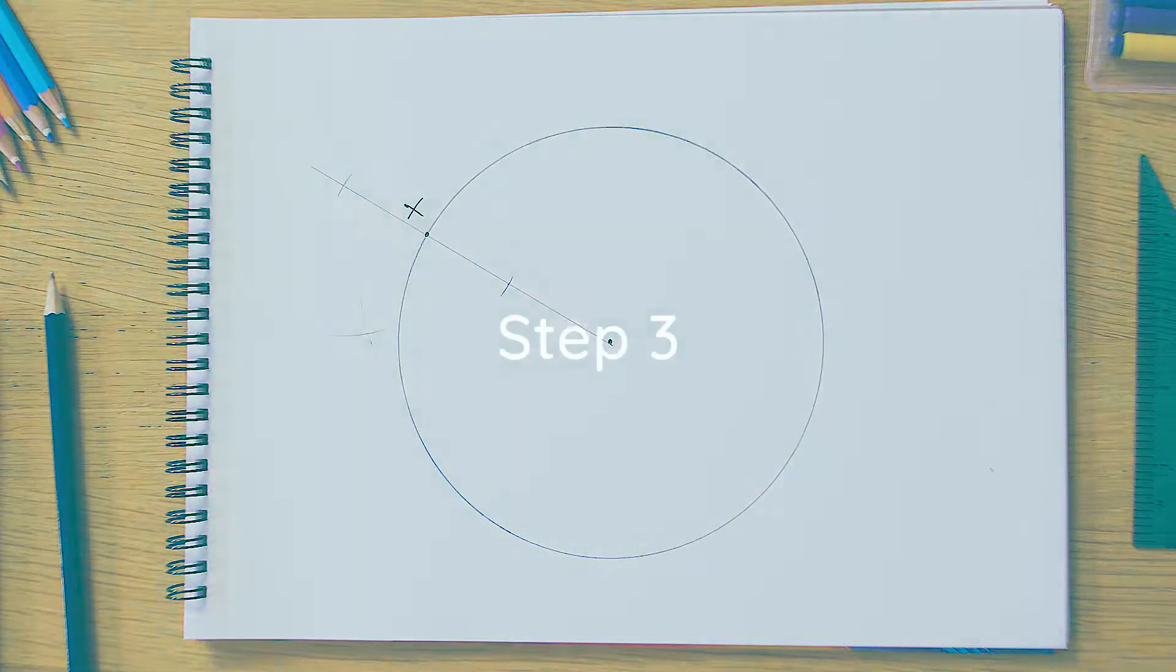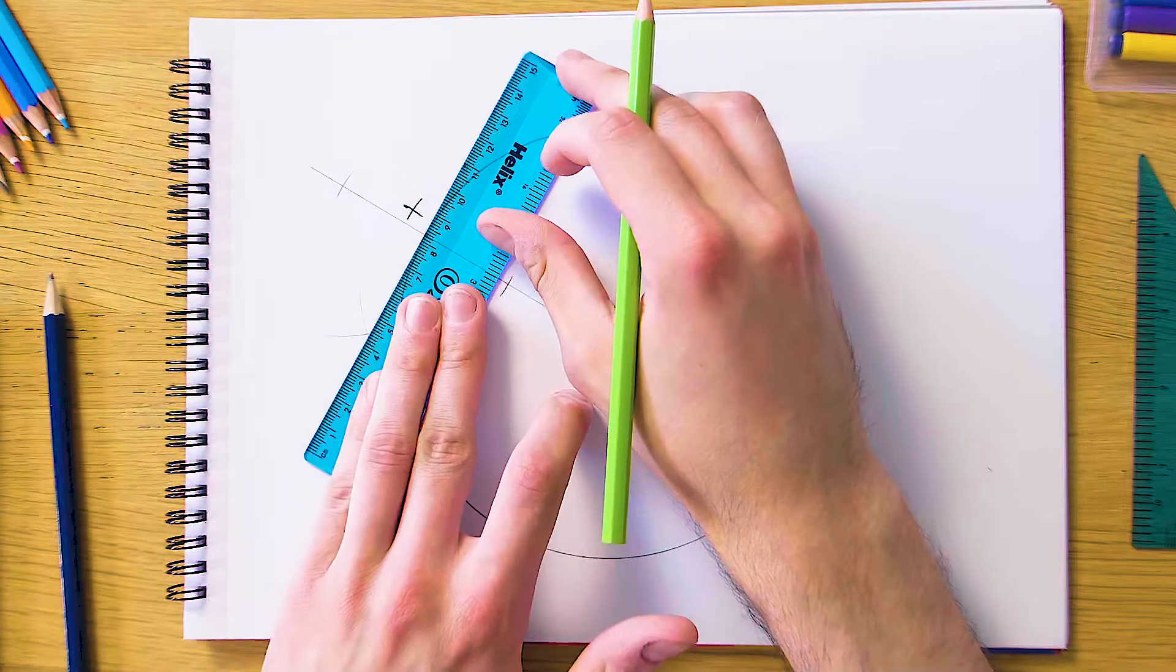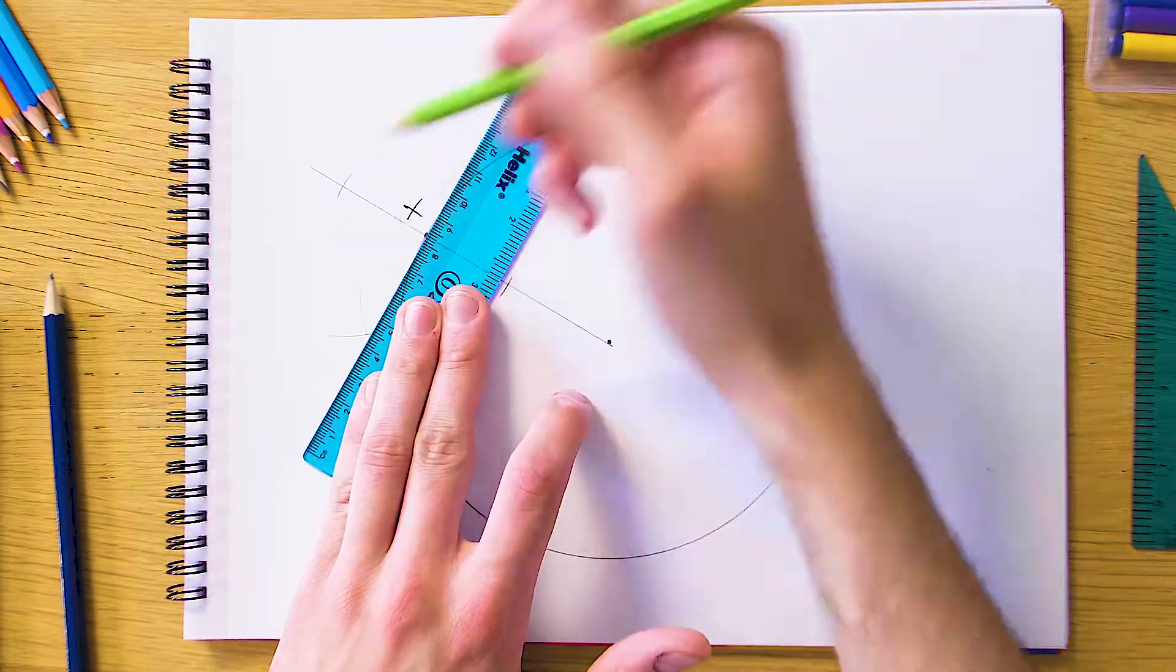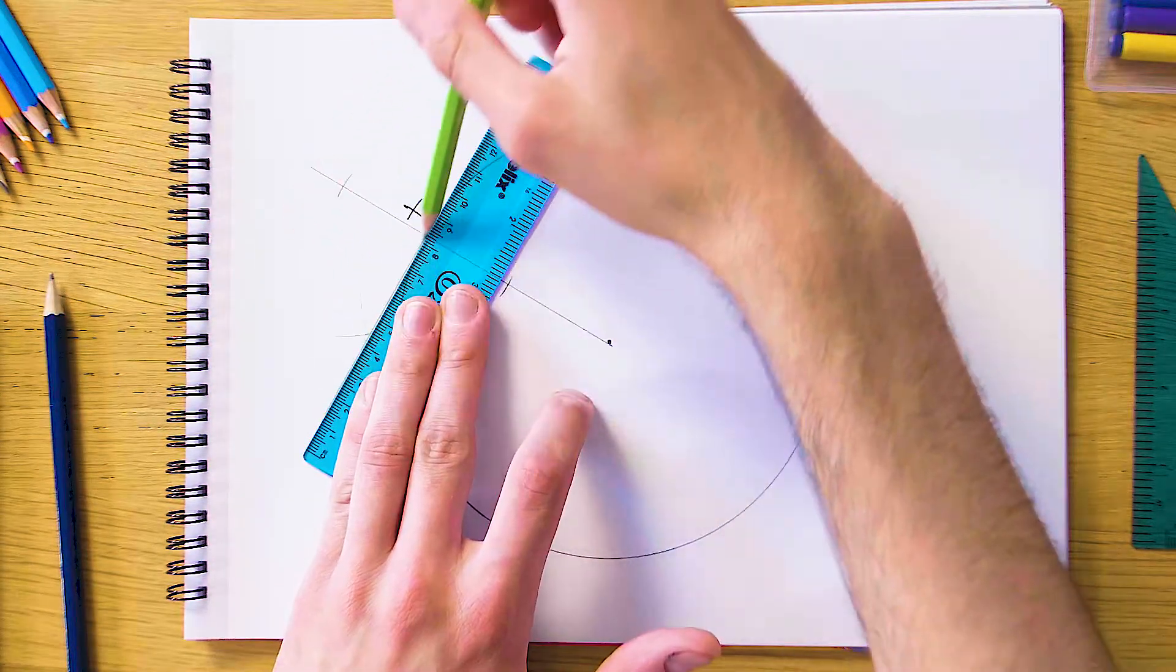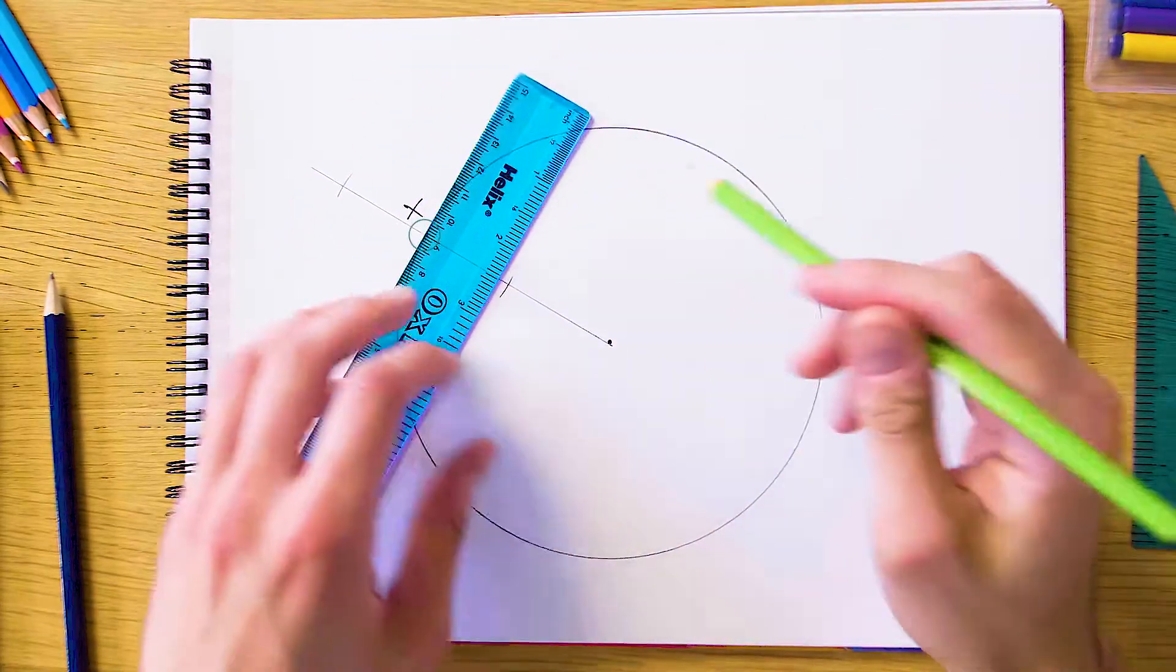So the final step here is just going to connect X to this intersect. So using our ruler, we're just going to make sure that it's nice and it just barely touches the circle, because remember this is a tangent to the circle and that means that it just barely touches one point on the circle and